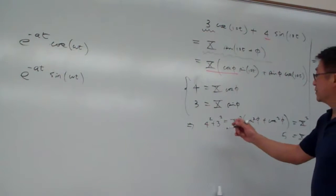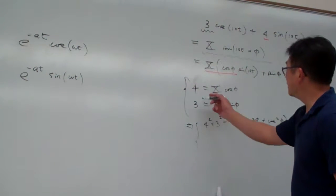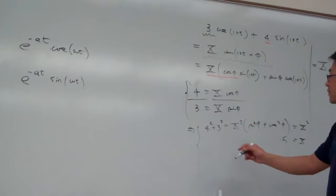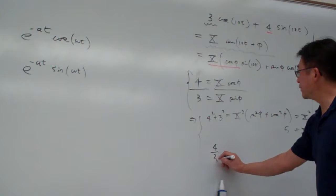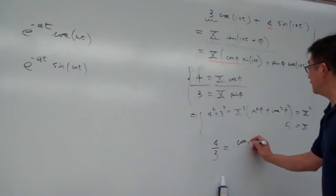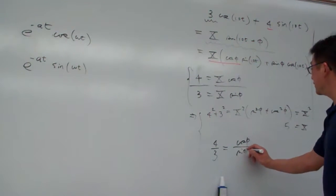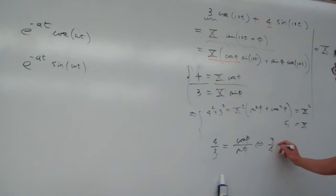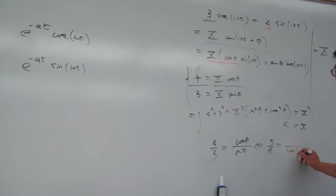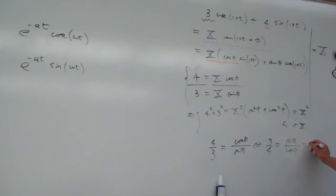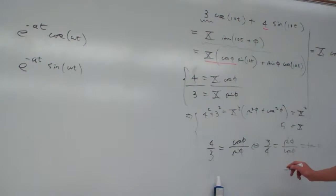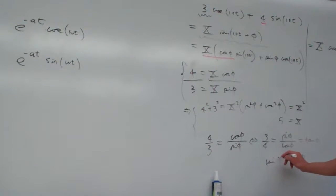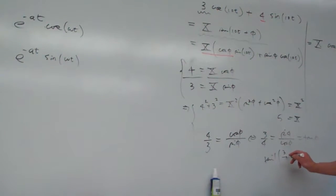Then also, you divide the terms and compare them to each other. For example, 4 over 3 will be equal to cosine phi divided by sine phi — so that means 3 over 4 equals cosine phi over sine phi, and that is tangent. So from here, phi equals the arctangent of this one.